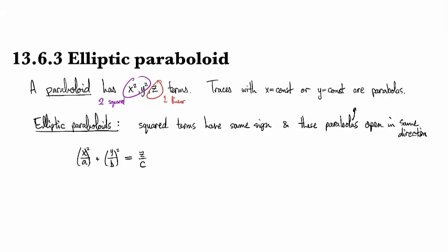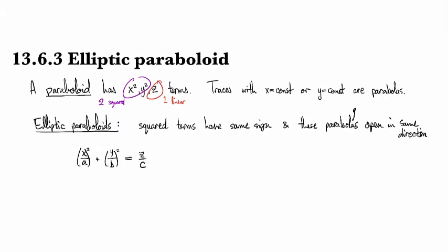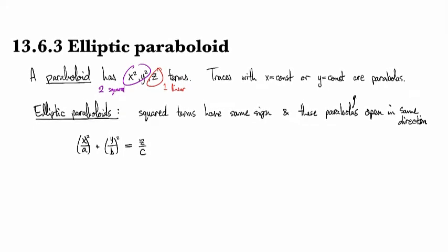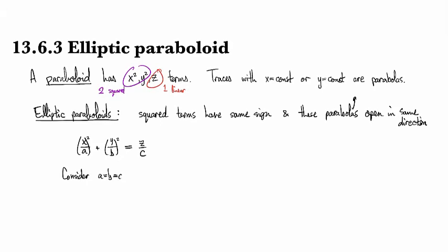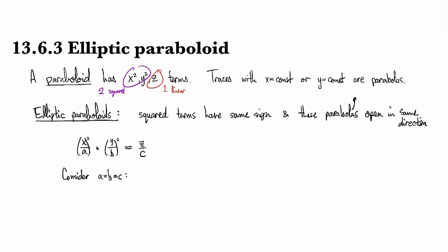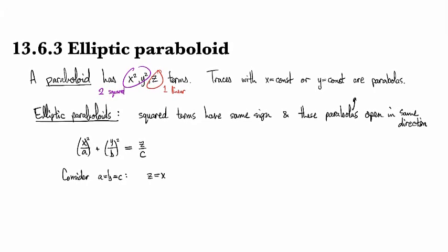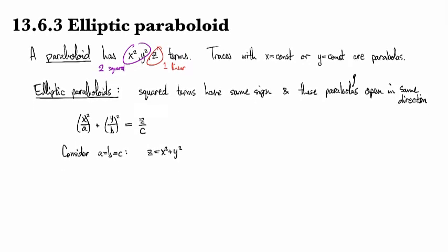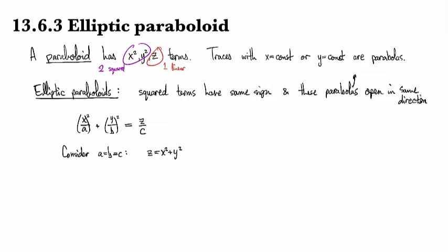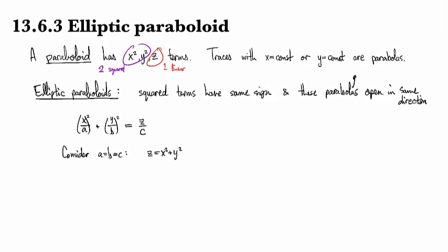So now, in order to illustrate what this surface looks like, let's consider just a simple case a equals b equals c. And so then we're looking at z equals x squared plus y squared. And I'll talk about what happens when a, b, and c are different in just a moment.